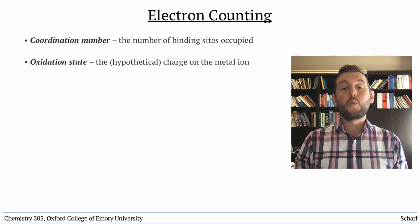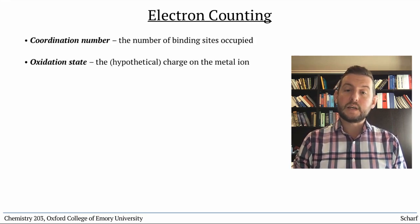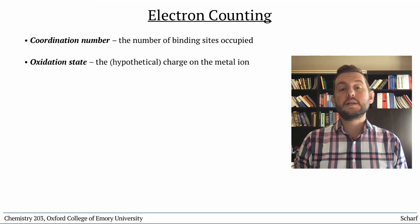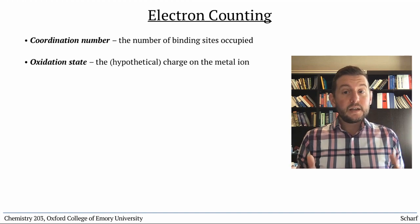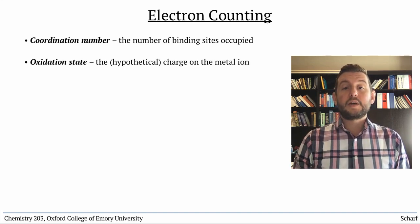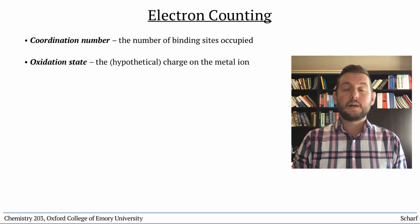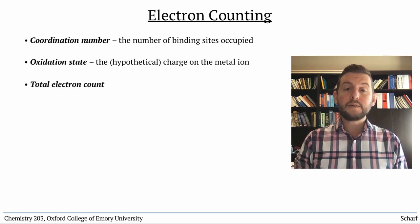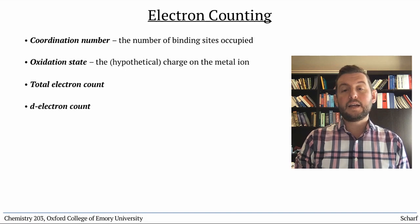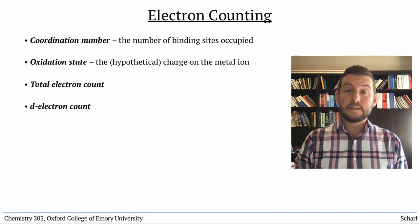In the last class, we saw how coordination number and oxidation state are two numerical quantities that characterize transition metal complexes. In addition, there are two other numbers that are commonly used to describe these complexes: the total electron count around the transition metal, and the d electron count of the metal ion itself.